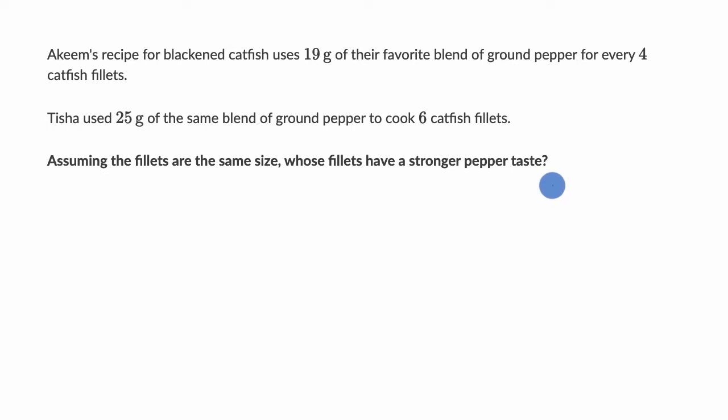All right, now let's do this together. So for Akeem, the ratio of the ground pepper to fillets is 19 grams for every four fillets. And for Tisha, it is 25 grams for every six catfish.